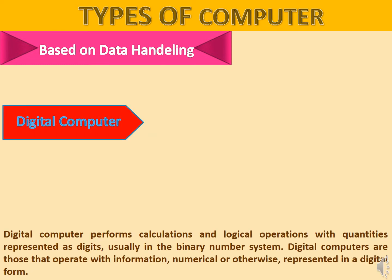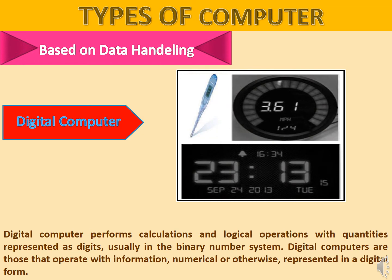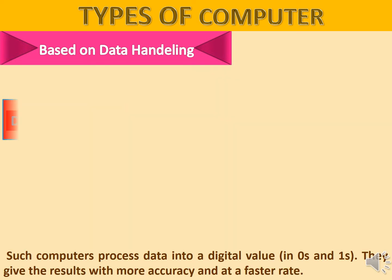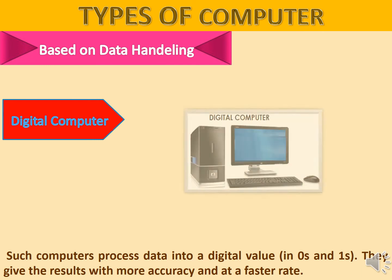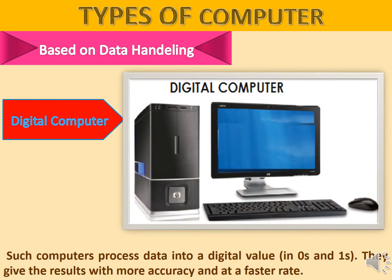Digital Computers perform calculations and logical operations with quantities represented as digits, usually in a binary number system. Digital Computers operate with information — numerical or otherwise — represented in digital form. They process data into digital values, that is 0s and 1s, and give results with more accuracy and at a faster rate.